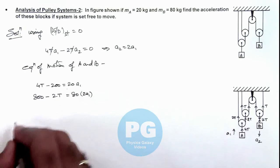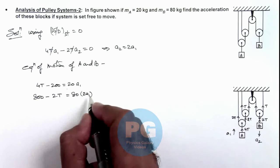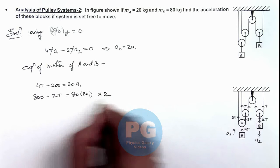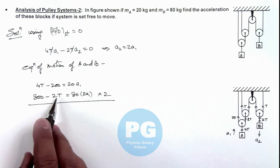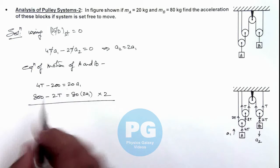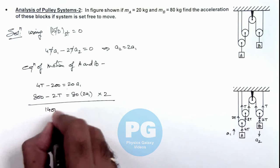And from these 2 equations if we wish to calculate the value of acceleration, we can multiply the second equation by 2 and add these equations. So here this 4T and minus 4T gets cancelled out. This will be 1600 minus 200 is 1400 is equal to...